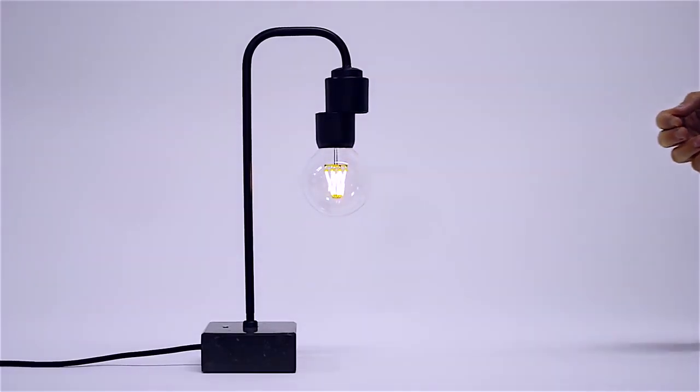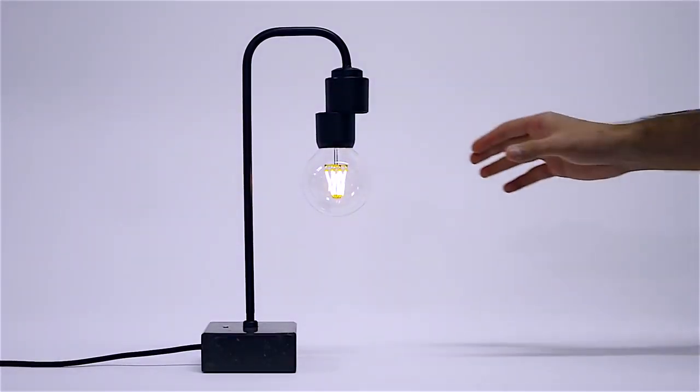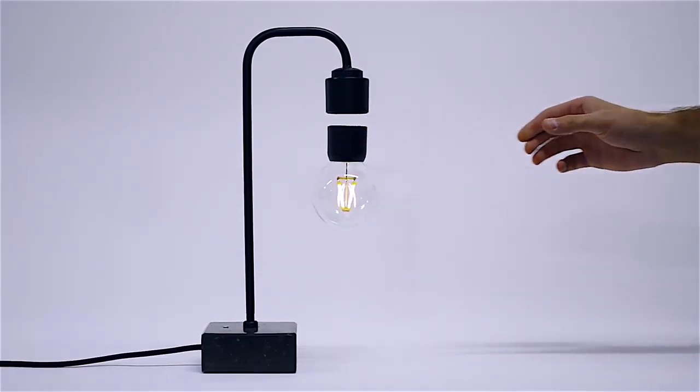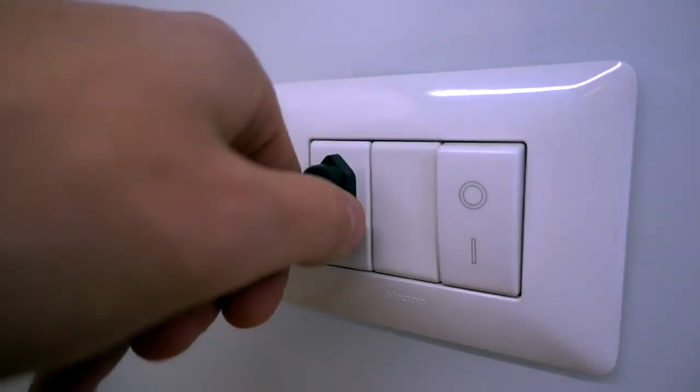The safety system automatically pulls the light bulb up into the socket in the event of blackouts, accidental knocks or interruption of the current flow.